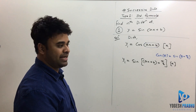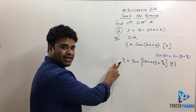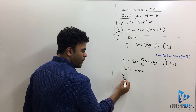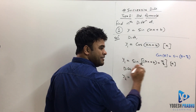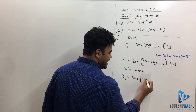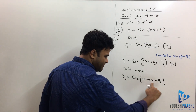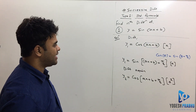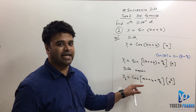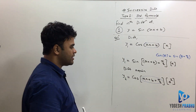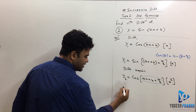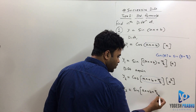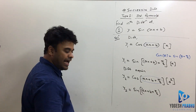Now differentiate once more to get y2, the second derivative. The derivative of sine gives cos, so we get cos of ax plus b plus π/2, multiplied by a squared via the chain rule. Converting cos θ back to sine using the same formula, y2 equals sine of ax plus b plus π/2 plus π/2, times a squared.